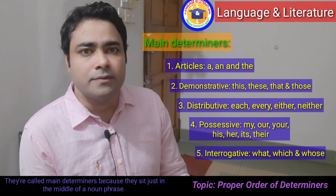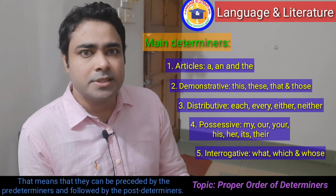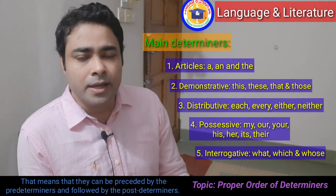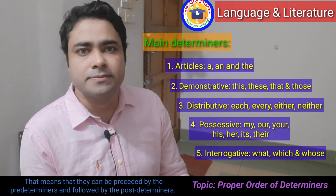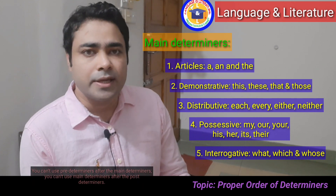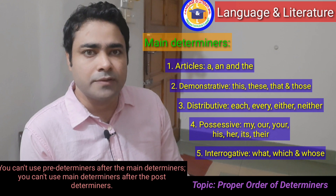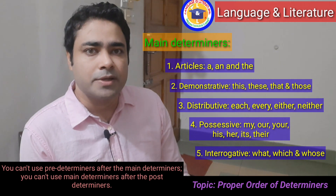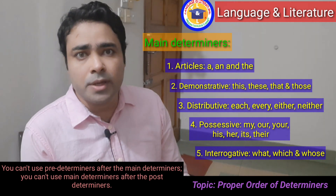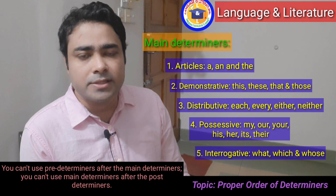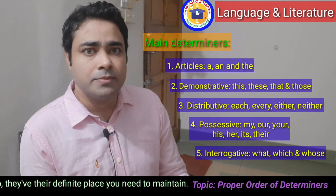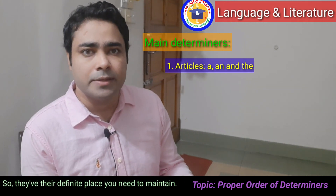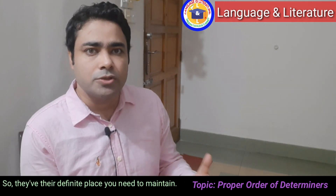They are called main determiners because they sit in the middle of a noun phrase, meaning they can be preceded by predeterminers and followed by post determiners. You cannot use predeterminers after the main determiners, or main determiners after the post determiners — they each have their definite place, which you need to maintain.